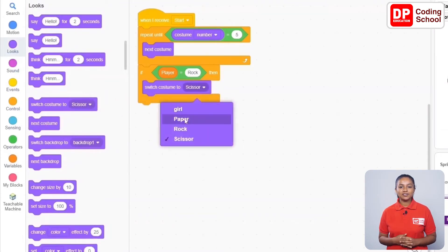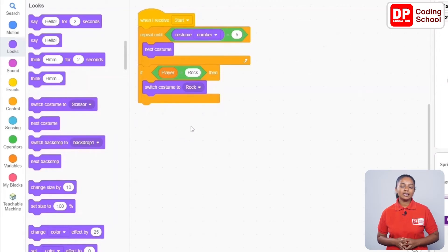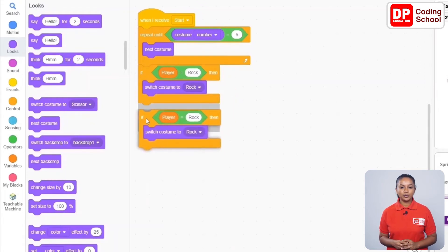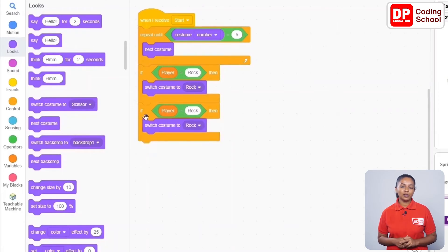In the same way, let's create the code for the costumes to change in both paper and scissors cases. For that, we can easily duplicate this code. I right-click on this if code block and duplicate it. Let's add the duplicated code block below. I change the player's value to paper in the condition here, and by clicking on the arrow here, the costume will be changed to paper.